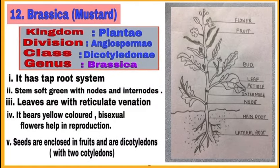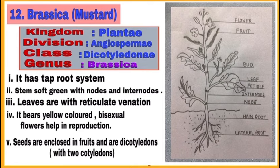Brassica is a dicotyledon plant. It has a taproot system. The stem is soft and green with nodes and internodes. Leaves have reticulate venation. It bears yellow-colored bisexual flowers which help in reproduction. Seeds are enclosed in fruits and are dicotyledons, meaning they have two cotyledons — that is why the name dicotyledon plant. After all this, note an important point about drawing diagrams: the diagram should be made opposite to its written part.